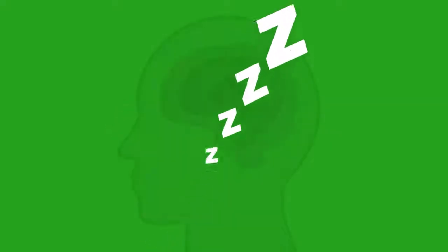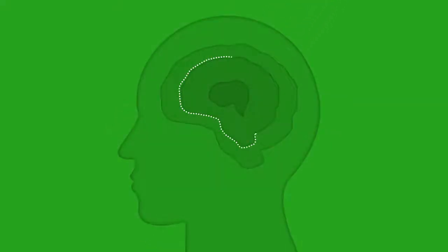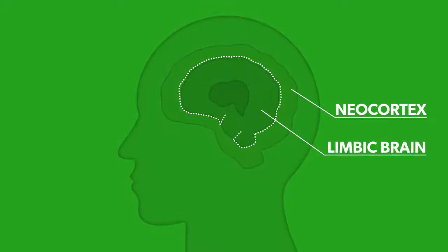During this state of mind, a door can be opened between two parts of our brain: the highly evolved neocortex and our limbic brain. The neocortex is the area of the brain that makes us human. This is where we reason and make decisions.